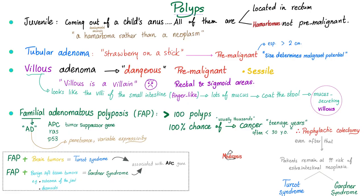In cases of familial adenomatous polyposis, which is an autosomal dominant disease, it is usually due to a mutation in the tumor suppressor gene. When you lose that tumor suppressor gene, you get no suppression of tumor — i.e., you get tumors. These poor patients have thousands of polyps in their colon, and there is almost 100% chance of developing colorectal cancer. It's not a matter of if, it's a matter of when.